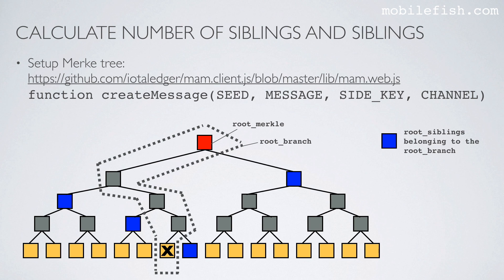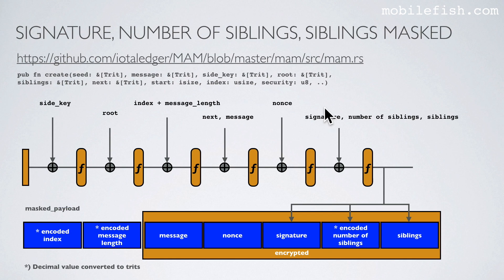In IOTA tutorial 19 I have already explained what number of siblings and siblings are — this is just a short recap. If this is your leaf and this is your root, then this is called your root branch. If you take the root branch as your reference, then these blue nodes are the siblings. In this example the number of siblings is 4: 1, 2, 3, 4. We have calculated our signature and we have our number of siblings and our siblings.